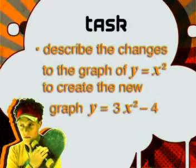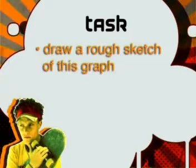You really are becoming a maths whiz. Now it's time for today's task: describe the changes to the parent graph of y equals x squared to create the new graph of y equals 3x squared minus 4, and draw a rough sketch of this graph. In the next lesson, we will look at another kind of function — the rational function. I think I've seen some of those, but I'll have to wait till next lesson to learn more about them. See you next time.